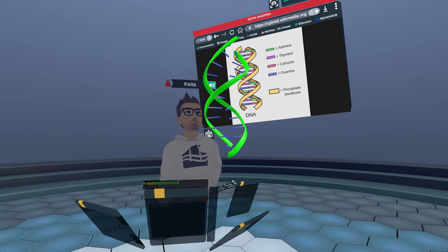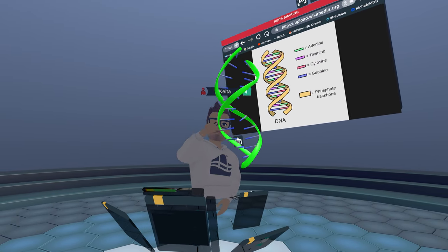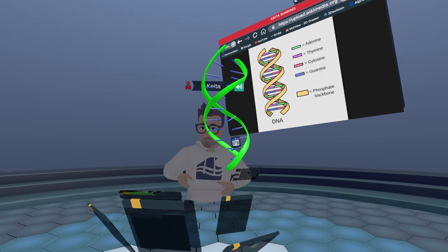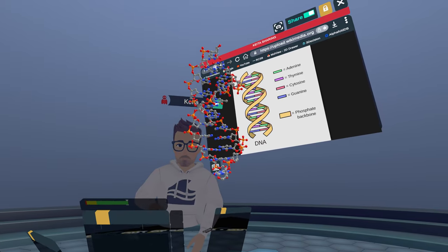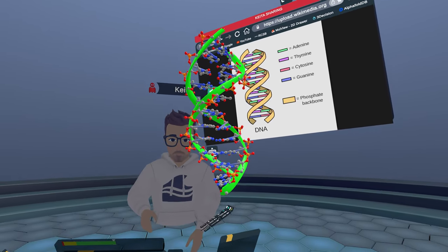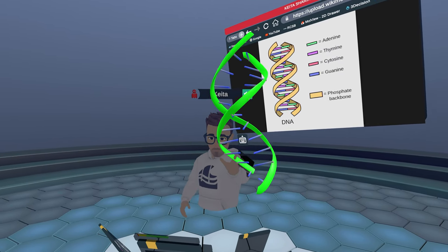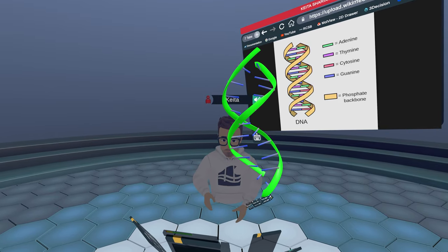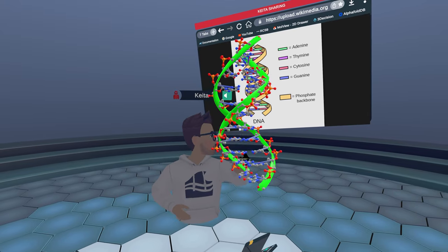But when you go down to the nanoscale or the molecular level, you're not actually going to see these nice little ladder-like structures. And in fact, what you actually see if you go down to the molecular level is these atoms. This is what we see often, but when you actually look at the molecular level, you can start to see all these different atoms.